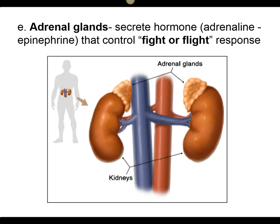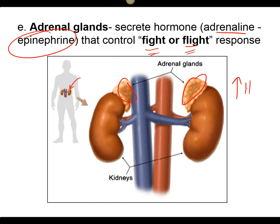The adrenal glands are located on top of the kidneys. They produce adrenaline — the real name for adrenaline is epinephrine — and this activates the fight-or-flight response: increased heart rate, increased blood pressure, increased respiratory rate, all of that.